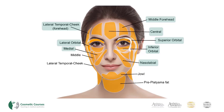Moving into the cheek area, we find three compartments. The first is the lateral temporal cheek, which is an extension of the compartment found in the forehead. Moving in, we then find the middle cheek fat compartment, found anterior and superficial to the parotid gland. Finally, the medial cheek fat is lateral to the nasolabial fold and found medial to the middle fat compartments.